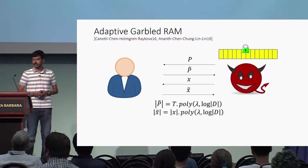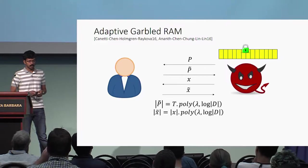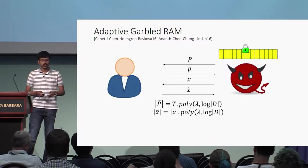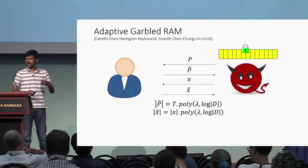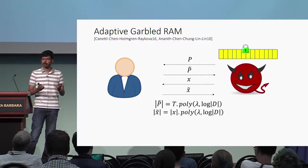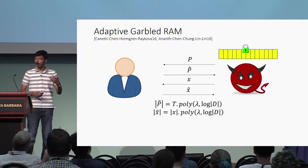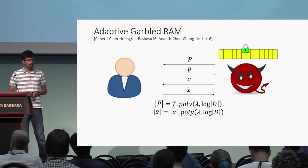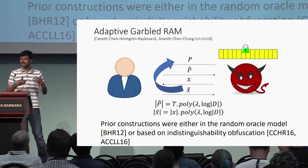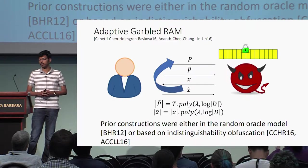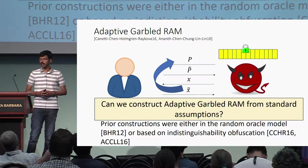As far as efficiency is concerned, we need the same properties as in the previous setting, and for security we require that the adversary cannot distinguish between the case where P-tilde and X-tilde is generated honestly and the case where P-tilde and X-tilde is generated by a simulator who just learns the output of the program. Unlike the selective setting, constructions satisfying the stronger notion of adaptive security have been harder to obtain, and all prior constructions are either in the random oracle model or based on extremely strong assumptions such as indistinguishability obfuscation.